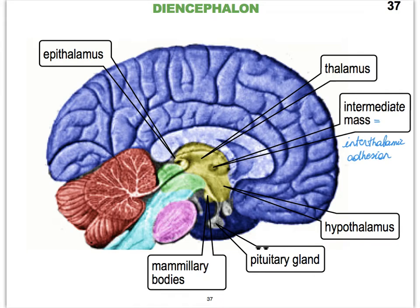The hypothalamus is going to be located below — hypo, or inferior to — the thalamus. Let's not forget what is anterior and posterior in this picture. Remember that where you see the cerebellum, that is posterior. So this is the posterior portion of the brain, and this side is anterior. Therefore, we look for the hypothalamus below the thalamus on the anterior side.